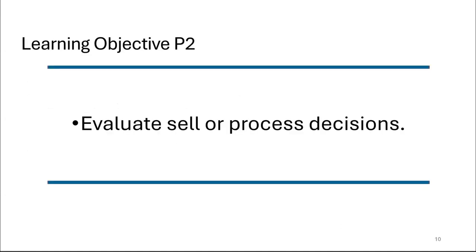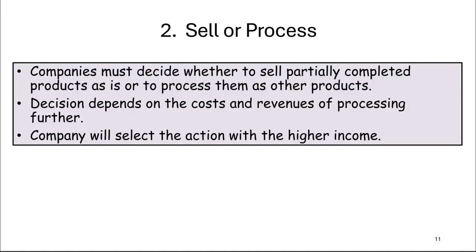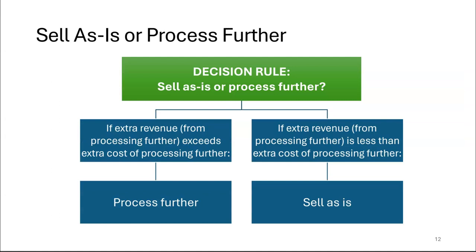For the sell or process decision, companies must decide whether to sell partially completed products as is or process them further. The decision depends on the cost and revenue of processing. The company will select the action with the higher income. If the revenue from processing exceeds the extra costs, we process further. If the revenue is less, we sell as is.